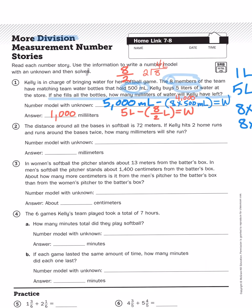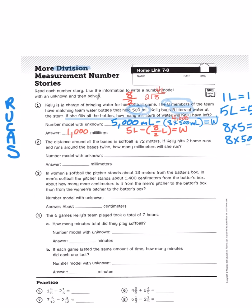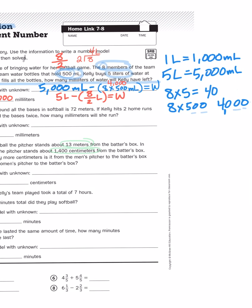Let's look at one more, shall we? In number three, it tells us that in women's softball, the pitcher stands about 13 meters from the batter's box. In men's softball, the pitcher stands about 1,400 centimeters from the batter's box. About how many more centimeters is it from the men's pitcher to the batter's box, from the women's pitcher to the batter's box. And again, they're asking us to compare amounts that are in different units. So, just comparing, I'm looking at 13 meters versus 1,400 centimeters. And again, the division component comes in because I need to compare the difference between 13 meters and 1,400 centimeters.